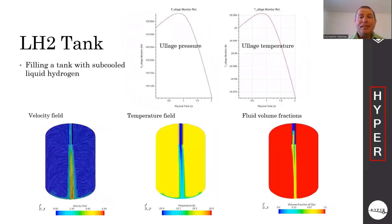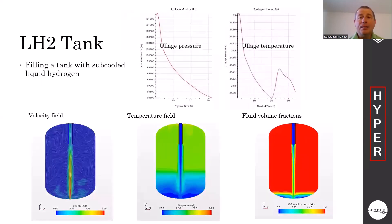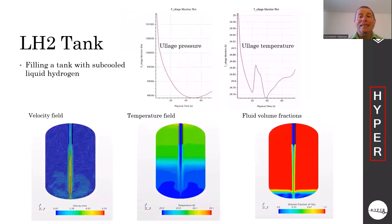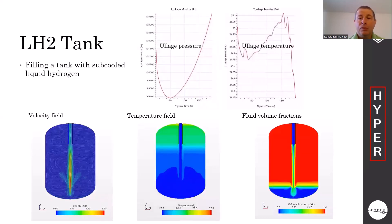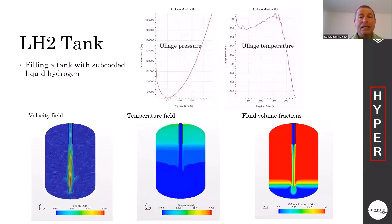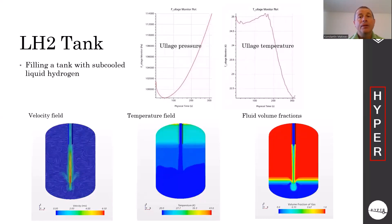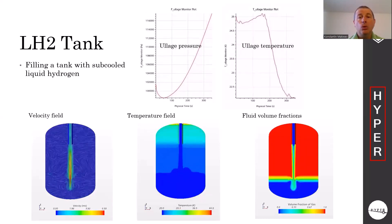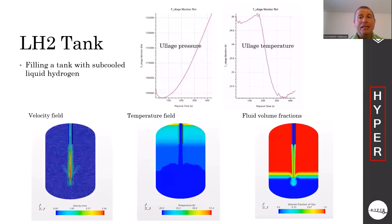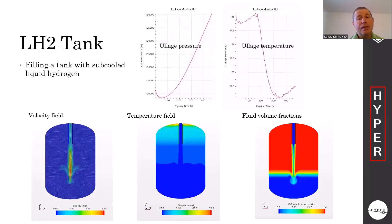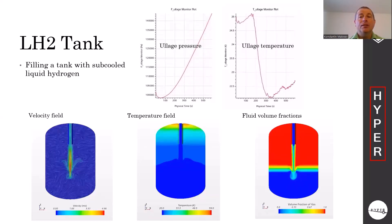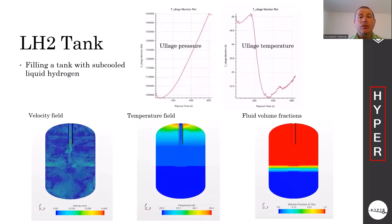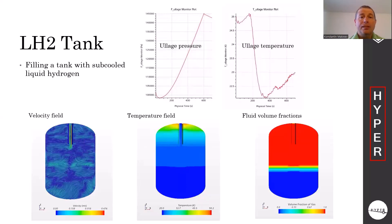The third scenario is the tank filling with liquid hydrogen that comes from the tube located at the top of the tank. You can see that the ullage gets compressed, pressure increases, and temperature initially drops since liquid temperature is lower than that of the ullage, and significant thermal stratification is noticed.